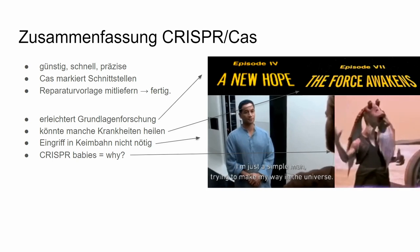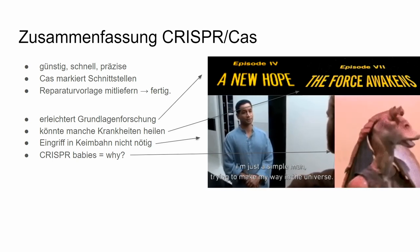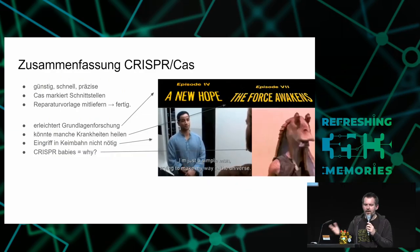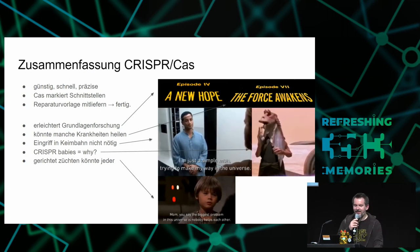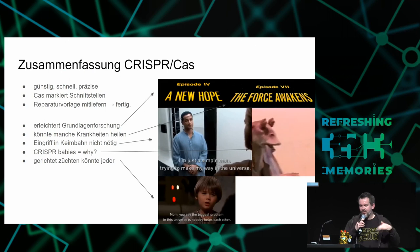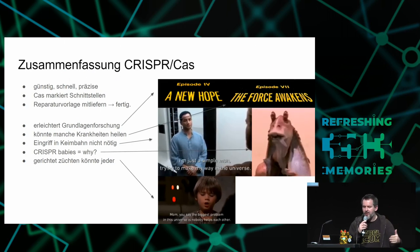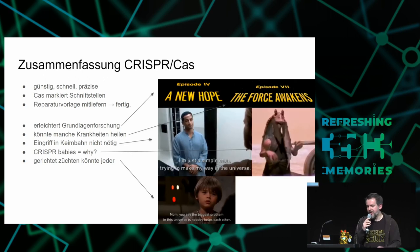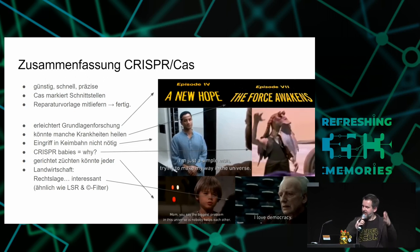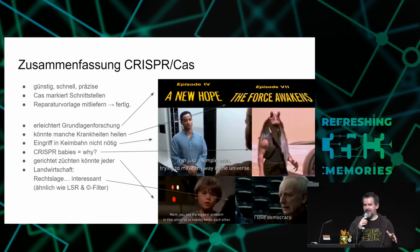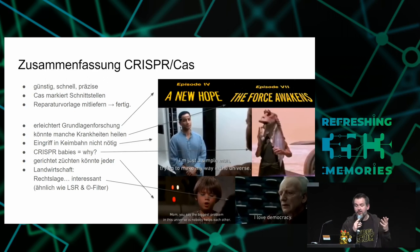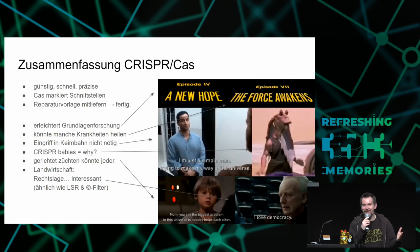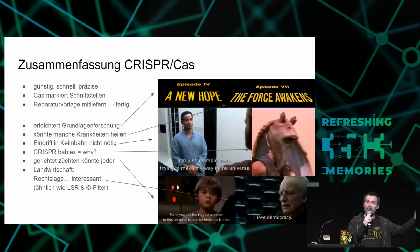CRISPR babies — illustrated with Jar Jar Binks — because it's reality and you don't really know why. We can breed organisms very directionally, and many people could do that, because mutagenesis would happen in the same plant so there's no transfer needed. But the problem is the legal situation is interesting — it's similar to copyright filters. It's going to hurt the little ones, and the bigger ones will have no problems with their well-financed legal divisions.